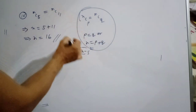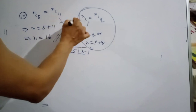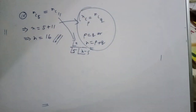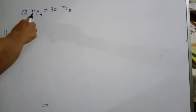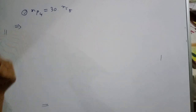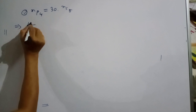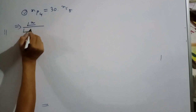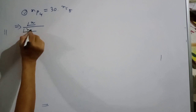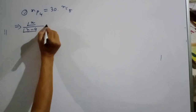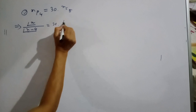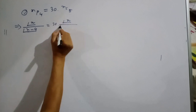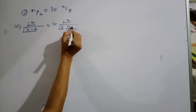Question number 5: nP4 equals 30 into nC5. Setting up using factorials: n! over (n minus 4)! equals 30 times n! over (5! times (n minus 5)!).